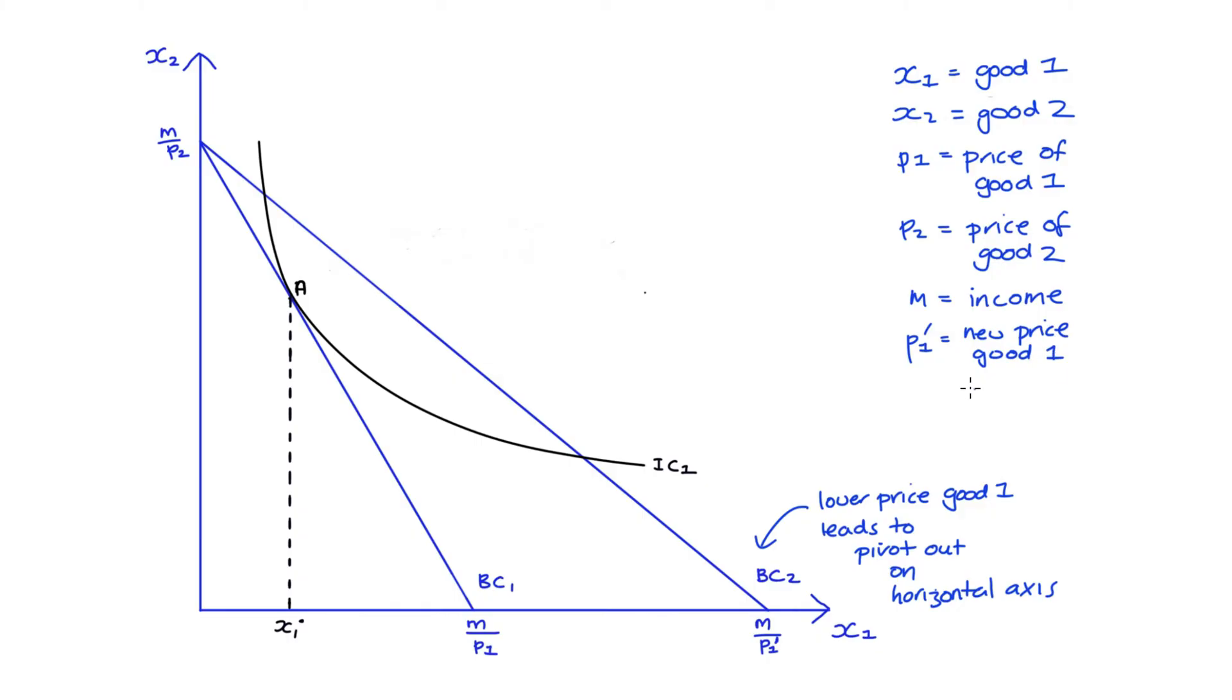Well if the price of good one decreases to say P1 prime, and I'm just noting here that P1 prime is less than P1, then actually this ratio of income divided by the price will be larger. Intuitively if the price of a good is cheaper then with our income we can buy more of it. So the new horizontal axis intercept will be further to the right and the budget constraint will be flatter.